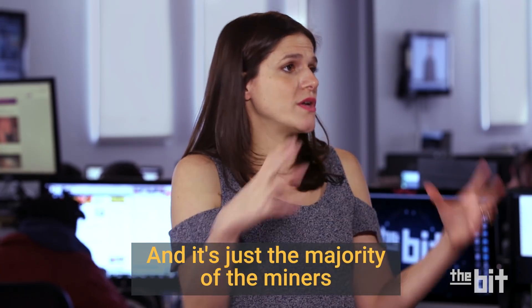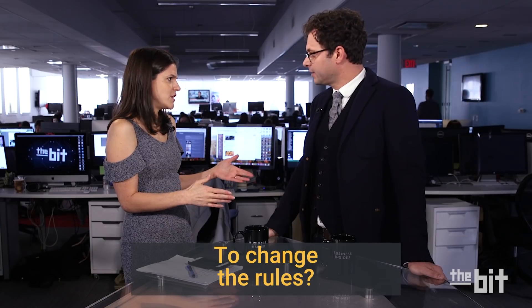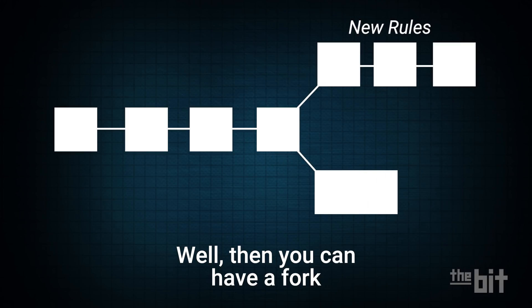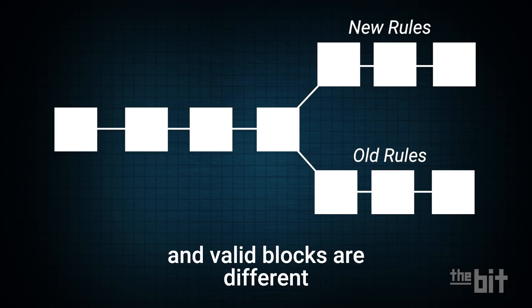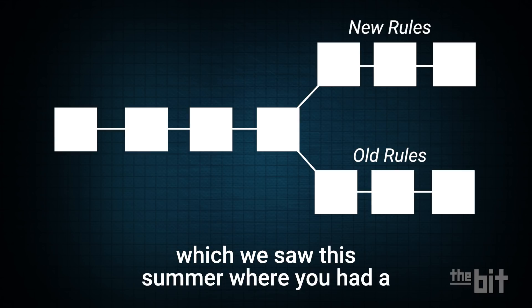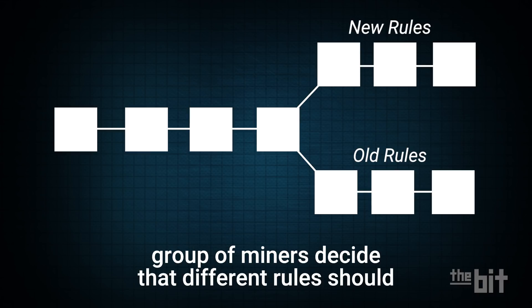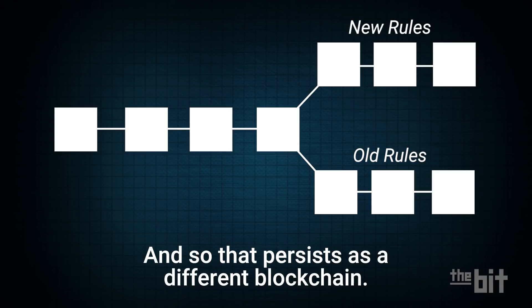It's just the majority of the miners that need to agree to change the rules. You can have a fork where a certain minority believe that the truth and valid blocks are different. And that's where you get into this area of forks, which we saw this summer, where you had a group of miners decide that different rules should apply to a valid transaction. And so that persists as a different blockchain.